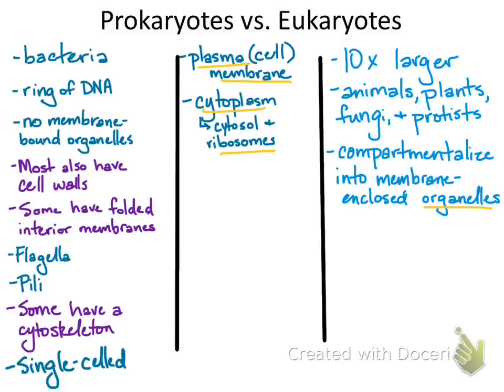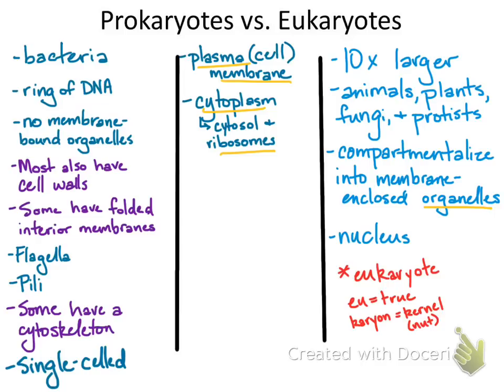Organelles — membrane-bound or not — play distinct roles in the cell. Different organelles have different structures and chemical compositions that allow them to carry out various chemical reactions, and depending on the set of chemical reactions they contain or facilitate, that determines their job. The most iconic part of any eukaryotic cell is its nucleus — it's actually how eukaryotes got their name. Eukaryote: 'eu' for true, and 'karyon' for kernel or nut, from the Greek root.